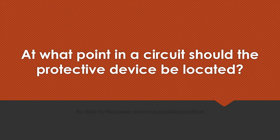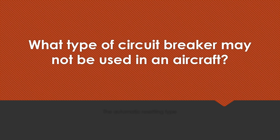At what point in a circuit should the protective device be located? As close to the power source as possible or practical. What type of circuit breaker may not be used in an aircraft? The automatic resetting type.